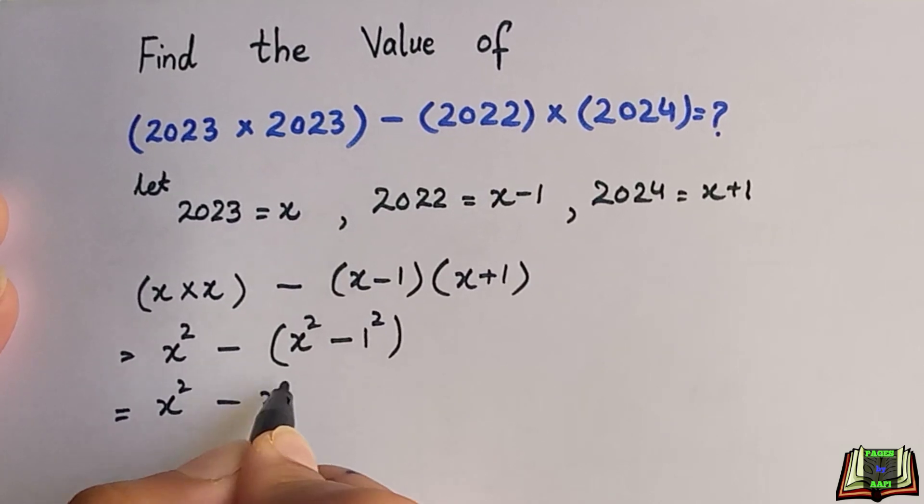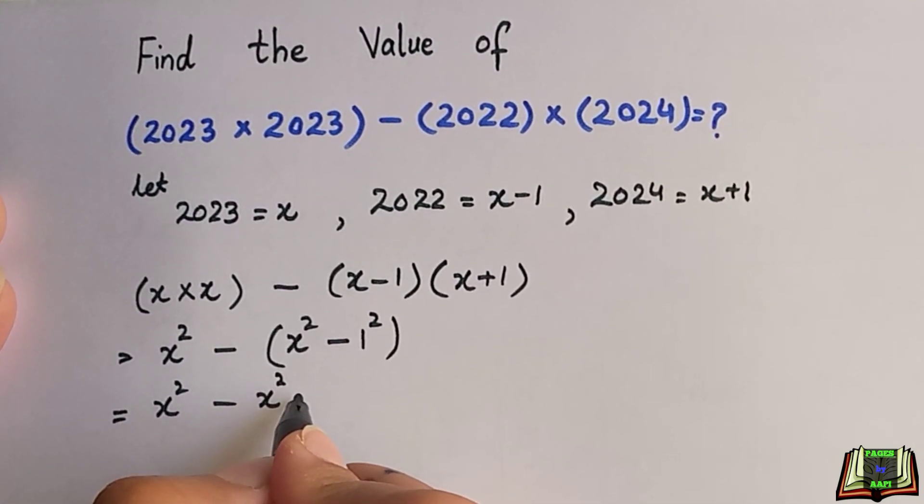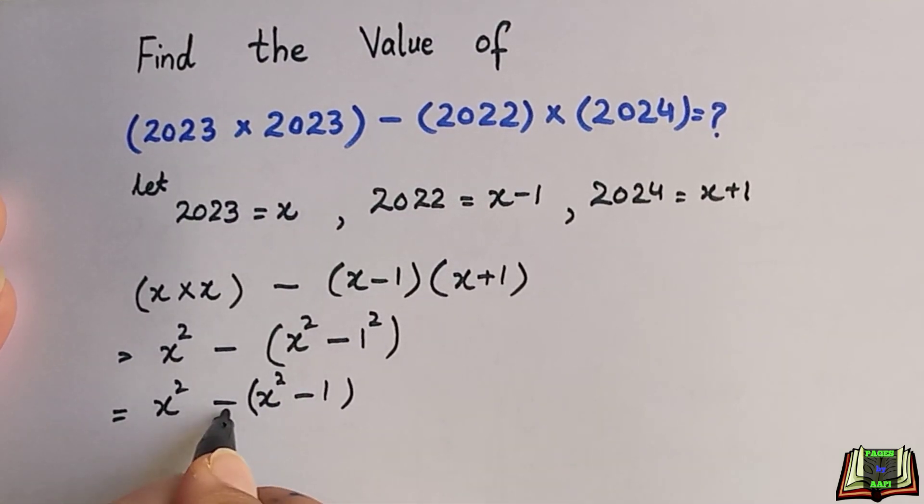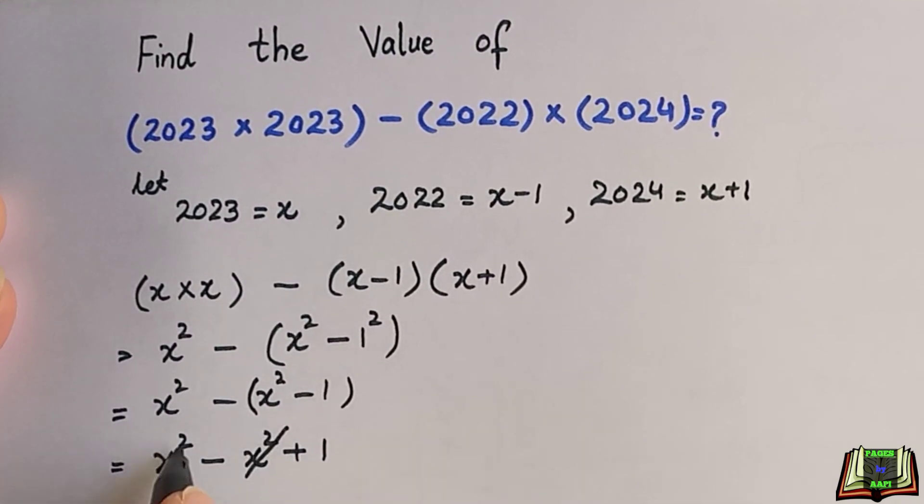So x squared minus 1 squared is again 1 minus 1. In the next step we are going to open the bracket and change the sign.